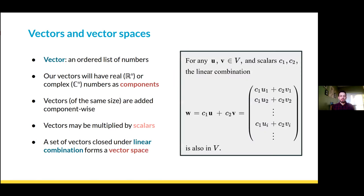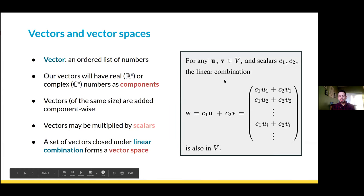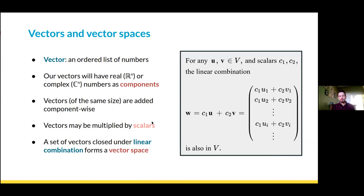Combining these two operations — component-wise addition of vectors of the same size and multiplication by scalars — gives us a slightly more general notion of a linear combination. This is a really foundational concept in linear algebra. If we take any two vectors u and v from some vector space and some scalars C1 and C2, we can write the linear combination C1 times u plus C2 times v. The outcome will always be a new vector w that's also in our vector space. We say the vector space is closed under linear combination — it's the set of all vectors we can get by making linear combinations of the vectors we start with.